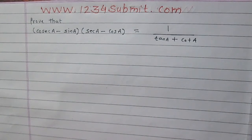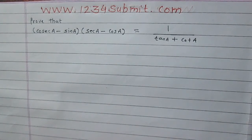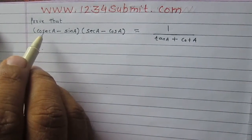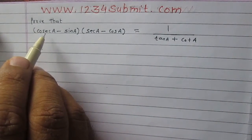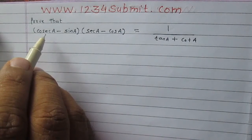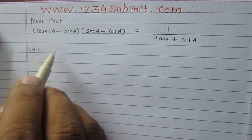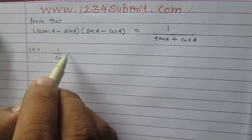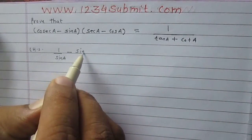Prove that (cosec A minus sin A) multiplied by (sec A minus cos A) is equal to 1 upon tan A plus cot A. Let us consider the left hand side. We know that cosec A is reciprocal of sin A, so we can write cosec A as 1 upon sin A, minus sin A as it is.